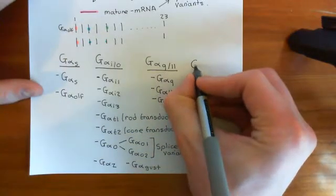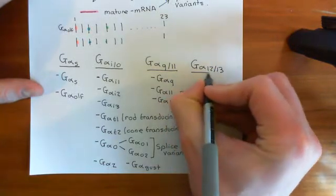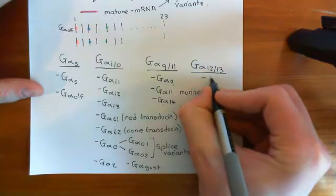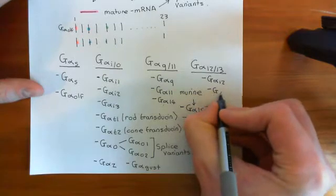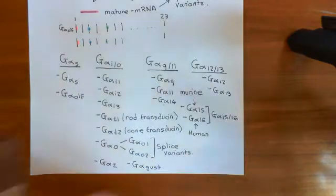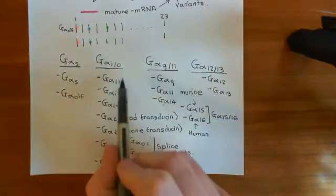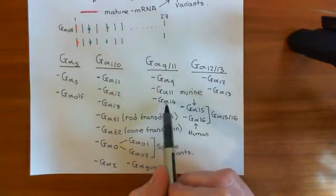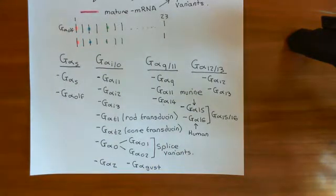The final family is G alpha 12/13, and this just contains two genes: G alpha 12 and G alpha 13. So let's count up our genes. We know we've got eight in the I/naught family, taking us to ten, and then counting through the Q/11 and 12/13 families brings us to 16 — so we now have the 16 separate genes that code for alpha subunits in humans.